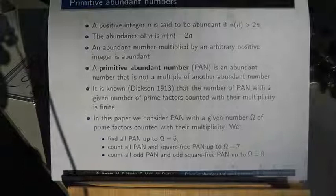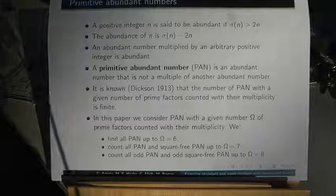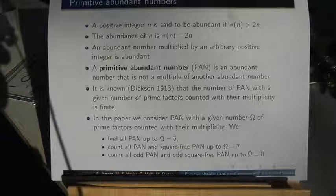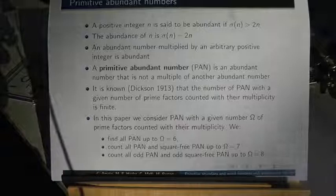Since an abundant number multiplied by an arbitrary positive integer is always abundant, we define a primitive abundant number as an abundant number that is not a multiple of another abundant number. It is known that the number of primitive abundant numbers with a given number of prime factors counted with their multiplicity is finite.